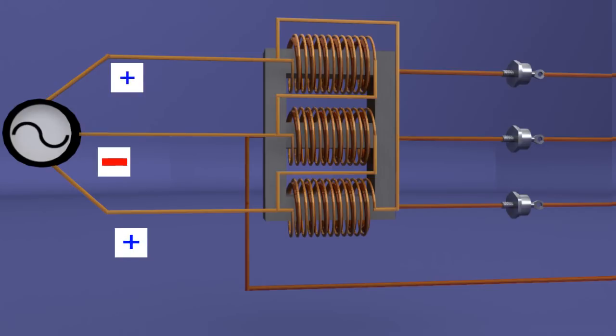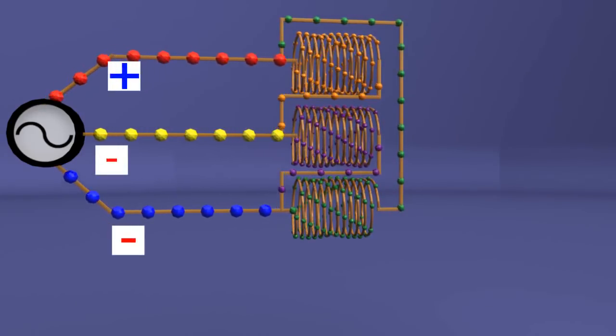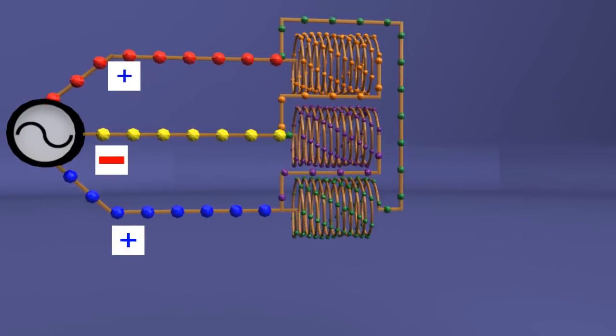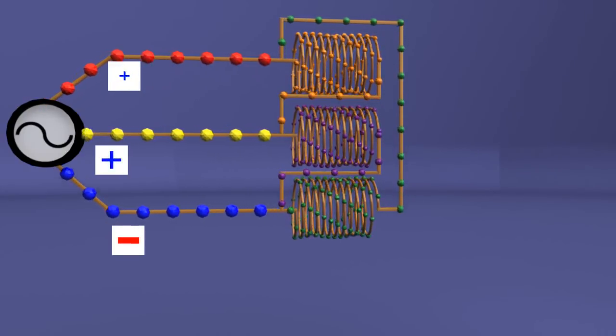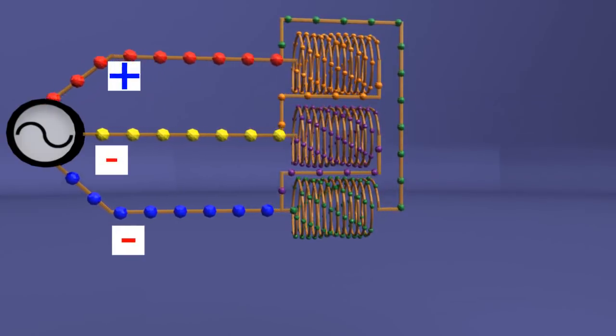As the primary winding is delta connected, the phase current differs in 30 degree phase angle with line current.